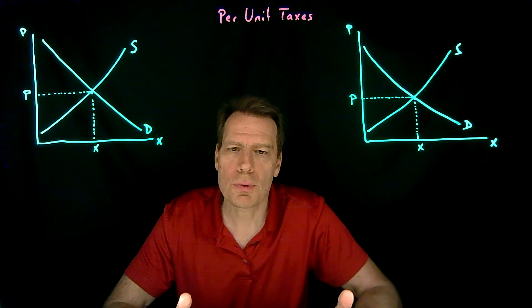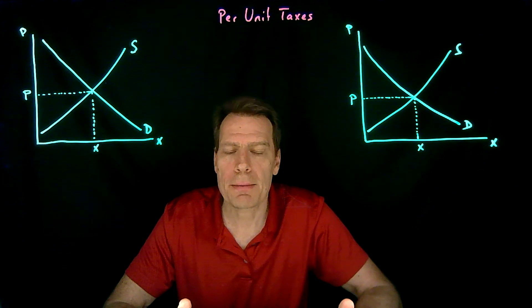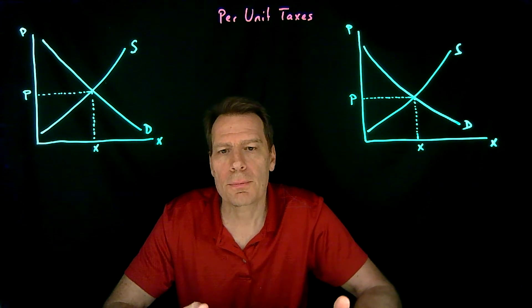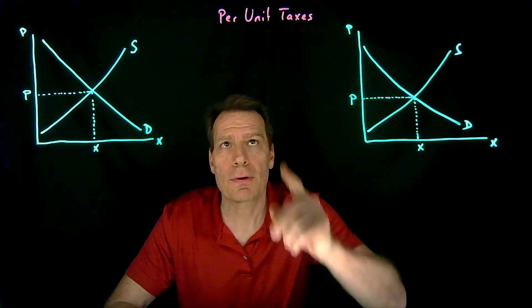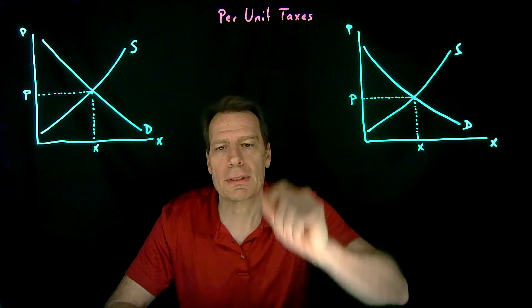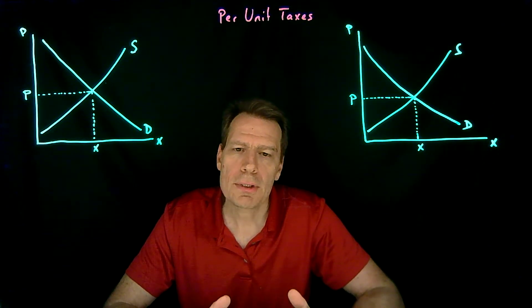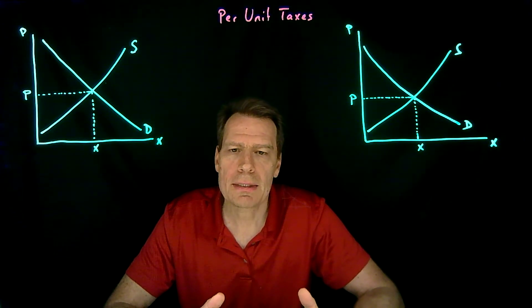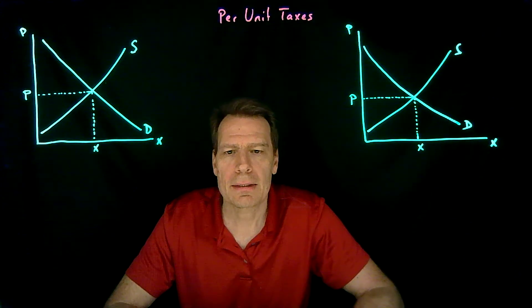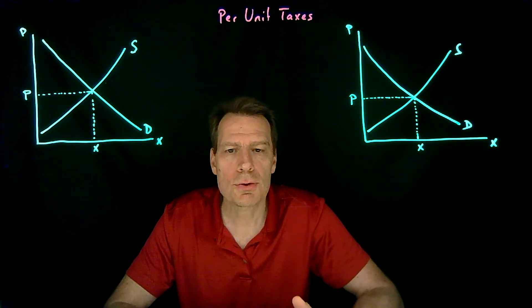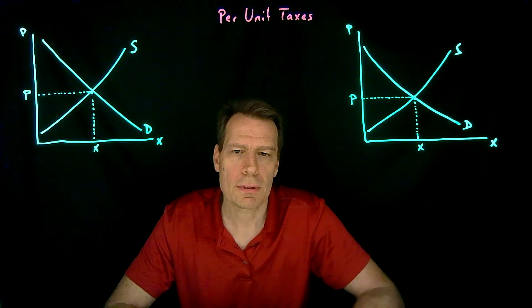Another way the government might distort prices is by imposing taxes. Here we'll look at the case of per-unit taxes. A per-unit tax is simply a tax that gets levied on every unit of the good that's either consumed or produced.